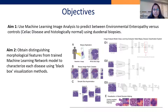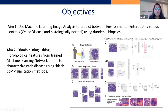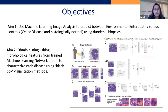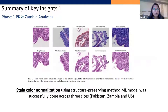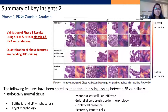Our objectives were to use machine learning image analysis to predict between environmental enteropathy versus controls, and then look at distinguishing features to peek within this black box. This is our pipeline: we take biopsies, digitize them, patch them, put them in different models, then visualize the model decision making using heat maps. The first challenge with inter-site data was color — you didn't want the algorithm to predict off color. From the three different sites — US, Zambia, and Pakistan — there was striking color differences. So we applied published approaches for stain normalization using structure-preserving methods.